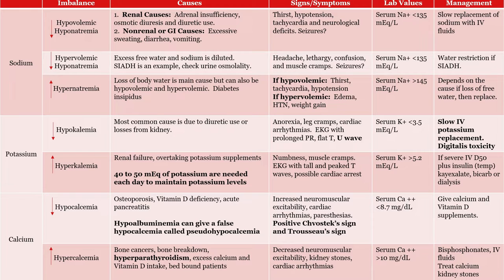Hypernatremia, or too high serum sodium level - the most common cause is loss of free water, which can happen with diabetes insipidus. You can see hypervolemic hypernatremia, but this is rare and usually due to both excessive sodium and water intake, possibly from excessive IV fluids that are hypertonic. Replace the free water and give ADH if diabetes insipidus.